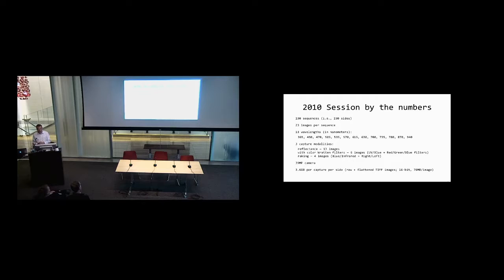Of those 23 images, we did 13 wavelengths, then three capture modalities: reflectance imaging, reflectance imaging with color filters — six images — and raking images — four images. We used a 39 megapixel camera, and each capture was 3.6 gigabytes. The capture itself was 1.8 gigabytes of raw data, immediately developed by the camera software producing another 1.8 gigabytes, totaling 3.6 gigabytes per capture. If you figure that we did 500 total sequences, you can see how that began to add up really quickly. These were 16-bit images, each 78 megabytes apiece.